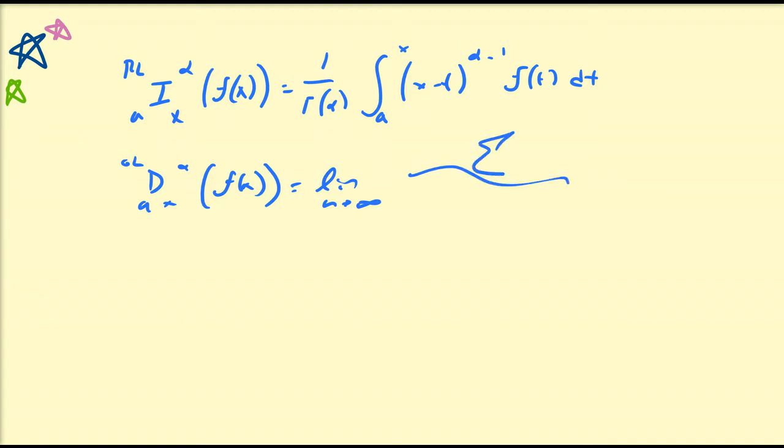In terms of analytic properties, it's very hard to use the Grünwald-Letnikov derivative to derive any properties. Although for numerical analysis purposes, the Grünwald-Letnikov derivative is okay. So in this video, what we're going to do is use the Riemann-Liouville fractional integral to derive a better representation for the Grünwald-Letnikov derivative, so that we can more easily derive some special properties of fractional derivatives.